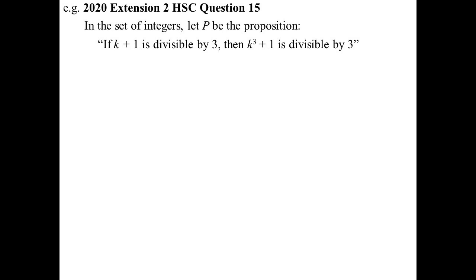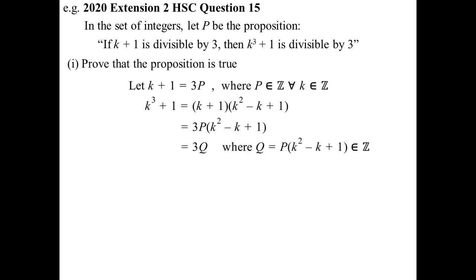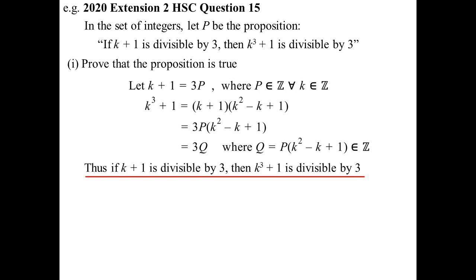2020 HSC. The proposition: if K + 1 is divisible by 3, then K³ + 1 is divisible by 3. Prove the proposition is true. Let K + 1 = 3P where P is an integer, for all integer K. Using the standard factorisation, K³ + 1 = (K + 1)(K² − K + 1). Since K + 1 = 3P, we have a factor of 3. And since K² − K + 1 is an integer and P is an integer, K³ + 1 is divisible by 3.